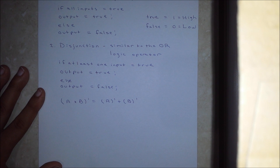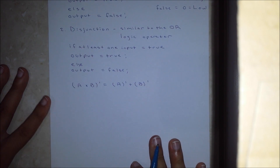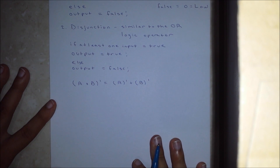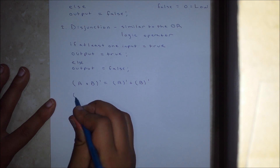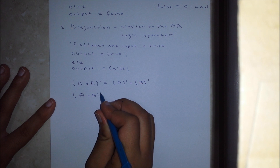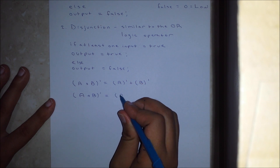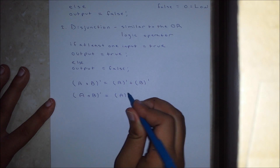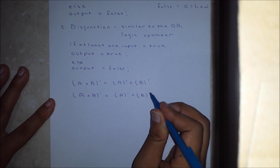The second rule is: the negation of a disjunction is the conjunction of the negations. The corresponding expression for that rule is: the complement of A or B is the De Morgan's equivalent to the complement of A and the complement of B.